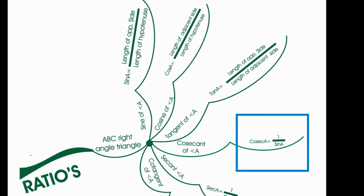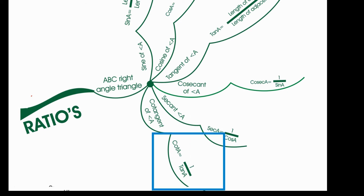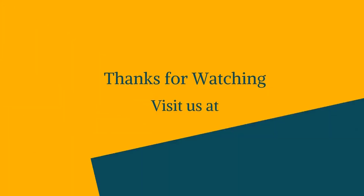Cosecant of angle A is called as cosec A. Cosec A is equals to 1 by sin A. Secant of angle A is called as sec A. Sec A is equals to 1 by cos A. Cotangent of angle A is called as cot A. Cot A is equals to 1 by tan A.